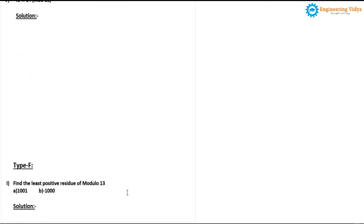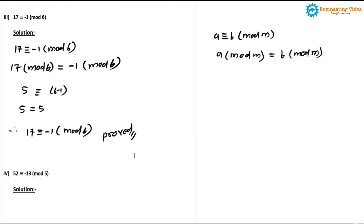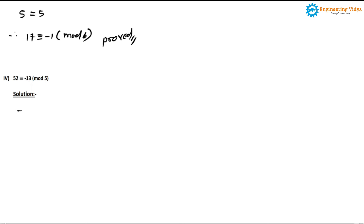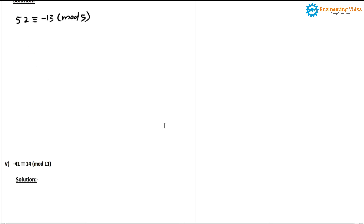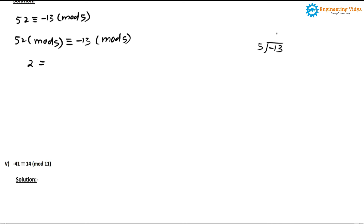In problem 4, we prove 52 ≡ -13 (mod 5). Applying the rule: 52 mod 5 = (-13) mod 5. Calculating 52 mod 5: 5 goes 10 times giving 50, remainder is 2, so the left-hand side is 2. For (-13) mod 5: 5 goes 3 times giving 15, so -15, remainder is 2. Since 2 = 2, the statement 52 ≡ -13 (mod 5) is proved.